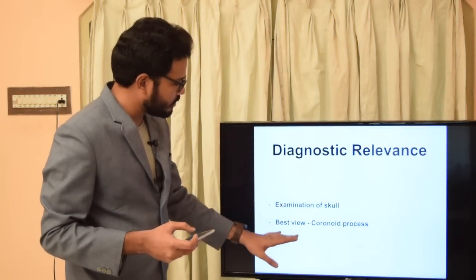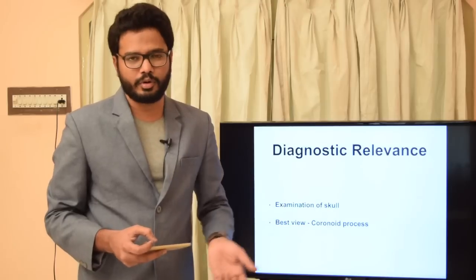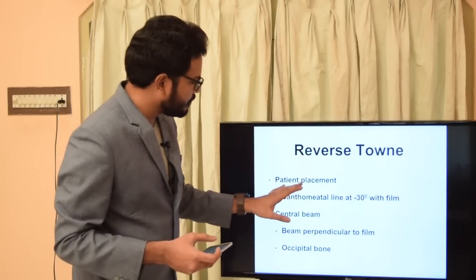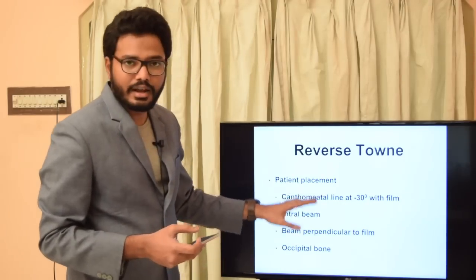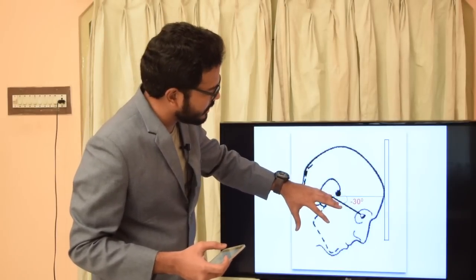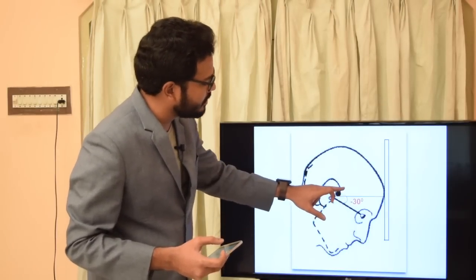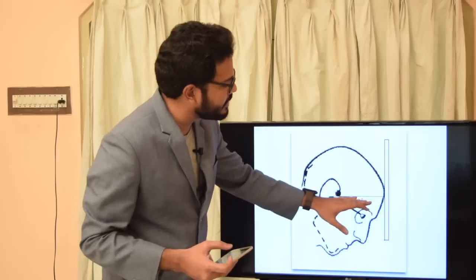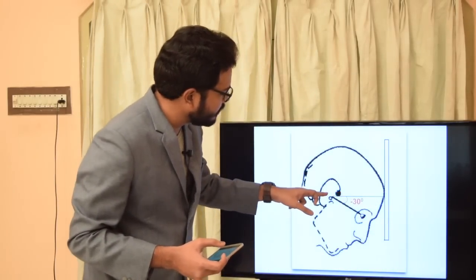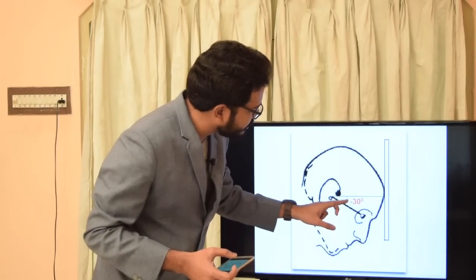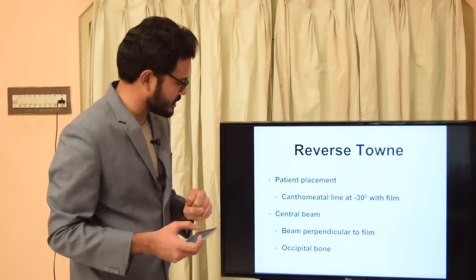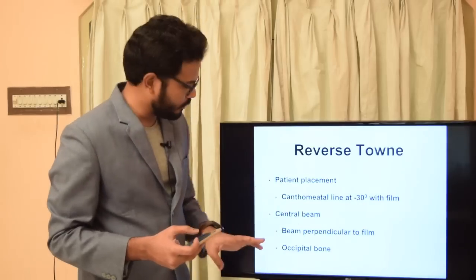PSF is mainly used for examination of the skull and it's the best view for evaluating the coronoid process. The next projection is the reverse Towns projection. Here the cantho-meatal line is at minus 30 degrees with the film — the patient's head is tilted so that the cantho-meatal line makes 30 degrees with a line perpendicular to the film.